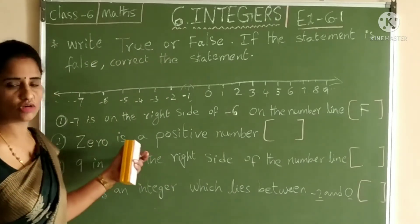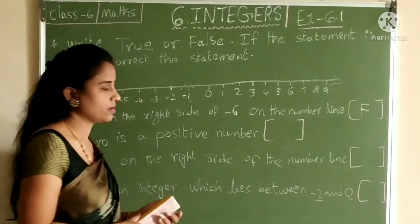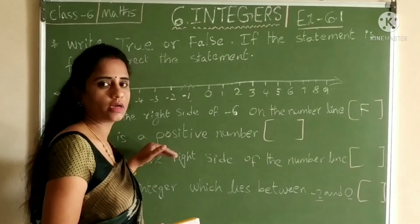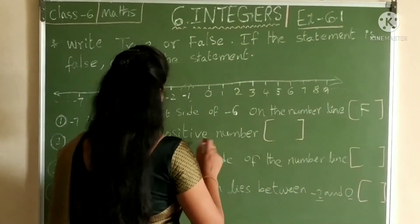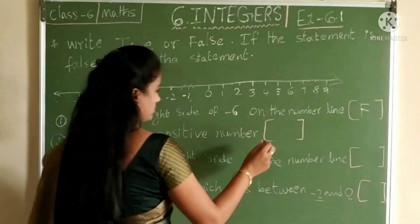0 is a positive number? No. We can't tell. 0 is neither positive nor negative. False.